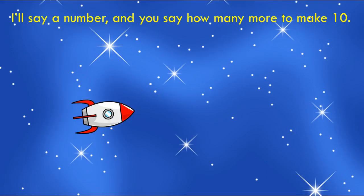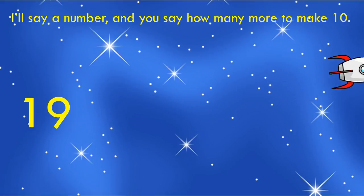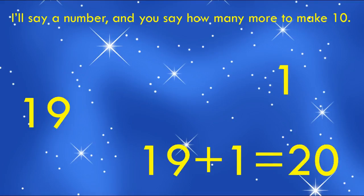Here's our next one — 19. Oh my goodness, this is a little bit trickier. Think about what the next 10 would be. 19 plus what would make our next 10? Let's see what the rocket ship says — one. We need one more to make the next 10. What would the next 10 be? 20. So the number sentence would be: 19 plus 1 equals 20.